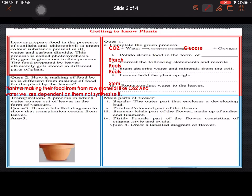This process is called photosynthesis. Oxygen is given out in this process, and the food prepared by the leaves ultimately gets stored in different parts of the plant. This is the basis we have to answer.